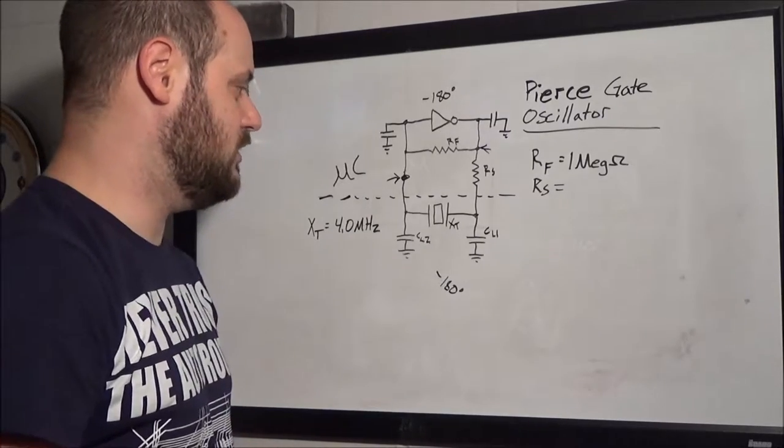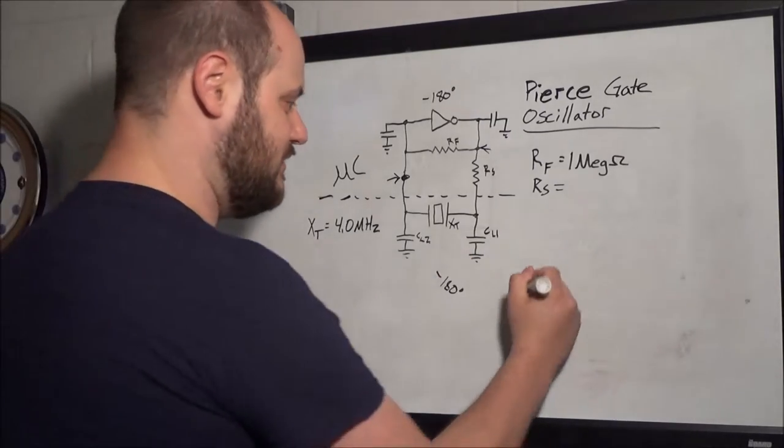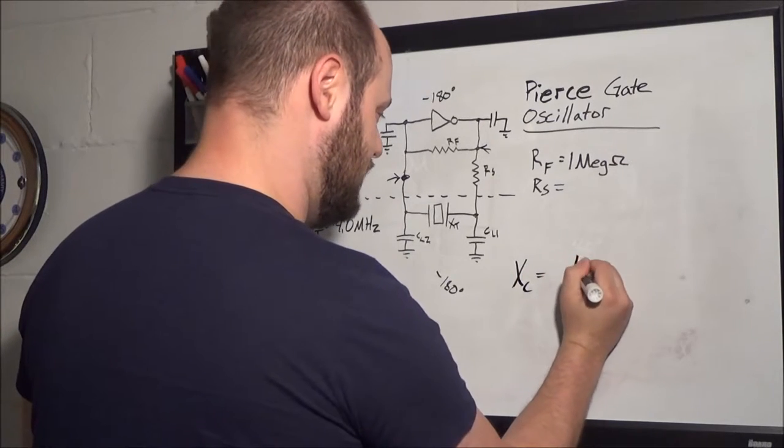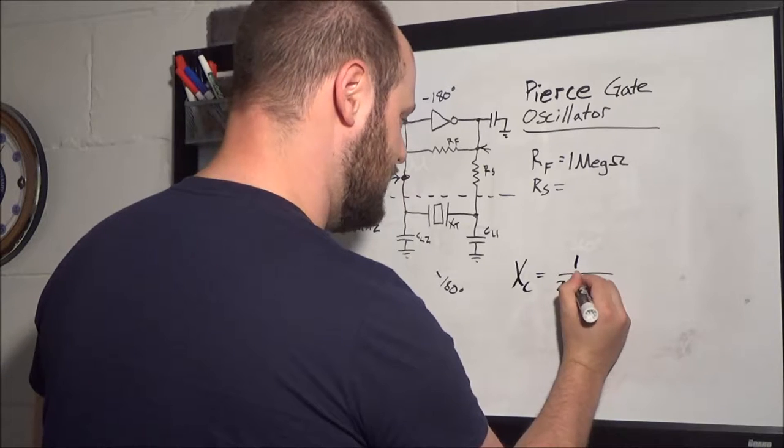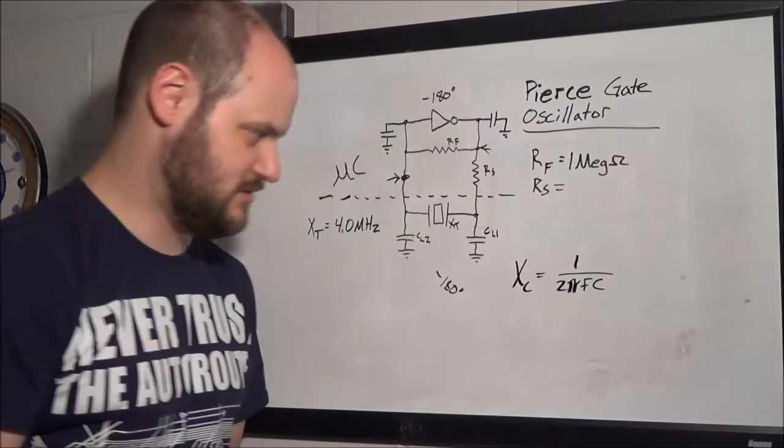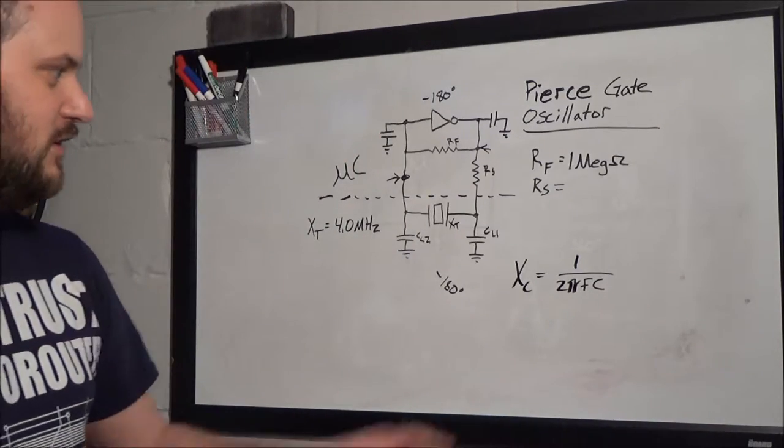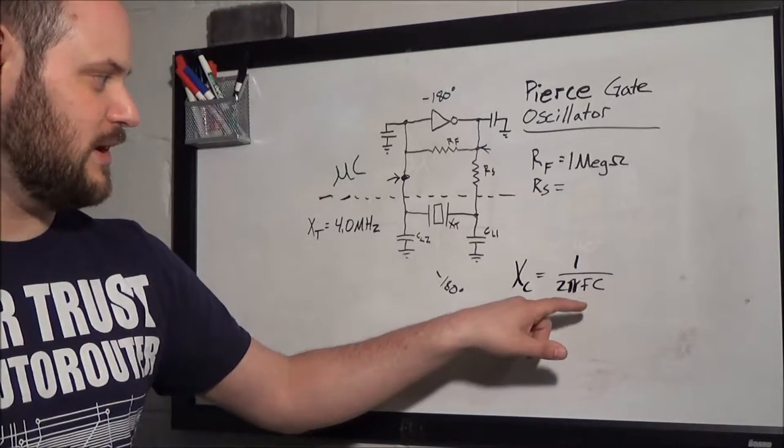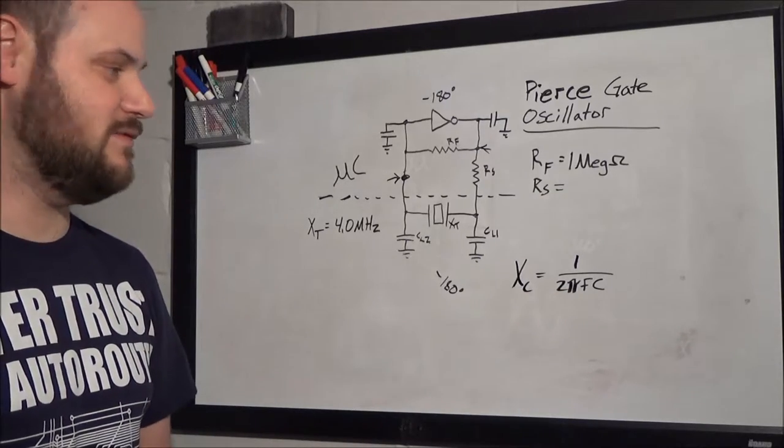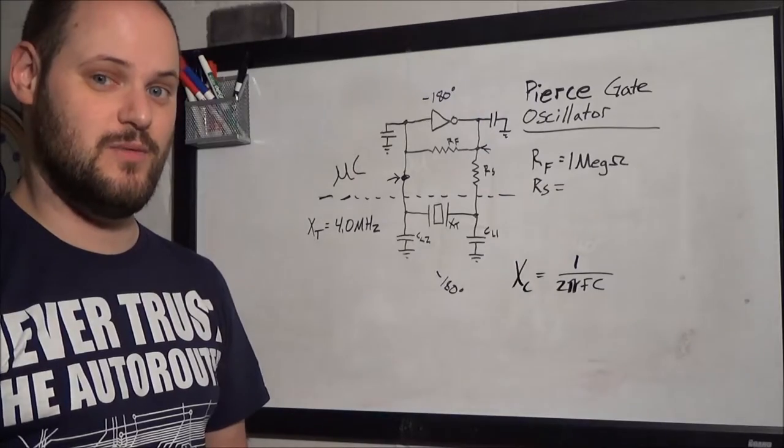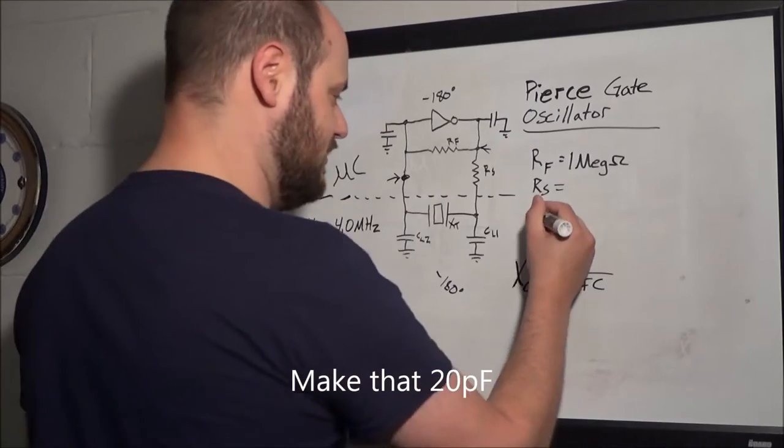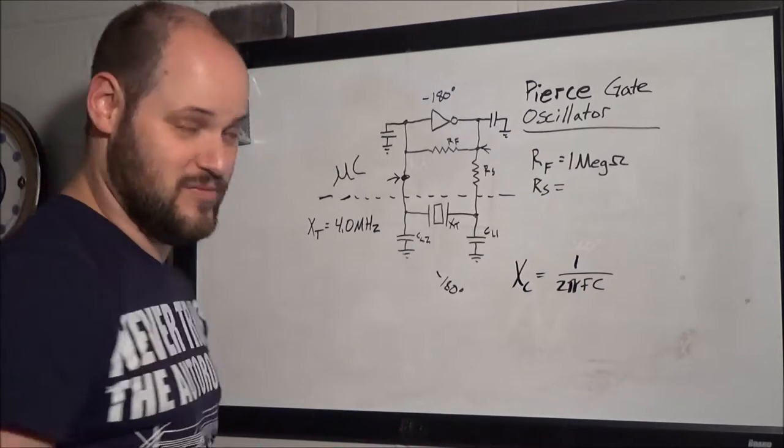And one thing that we know about capacitors is they have capacitive reactance. XC equals 1 over 2 pi times F times C. So, knowing that our frequency is 4 megahertz and we can take the typical value of the load capacitance that we get from the data sheet. In this instance, the data sheet asks for 33 pico-farads.